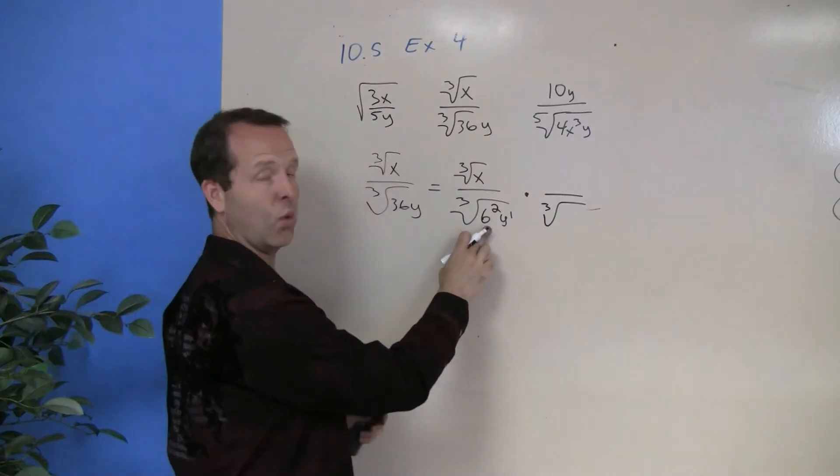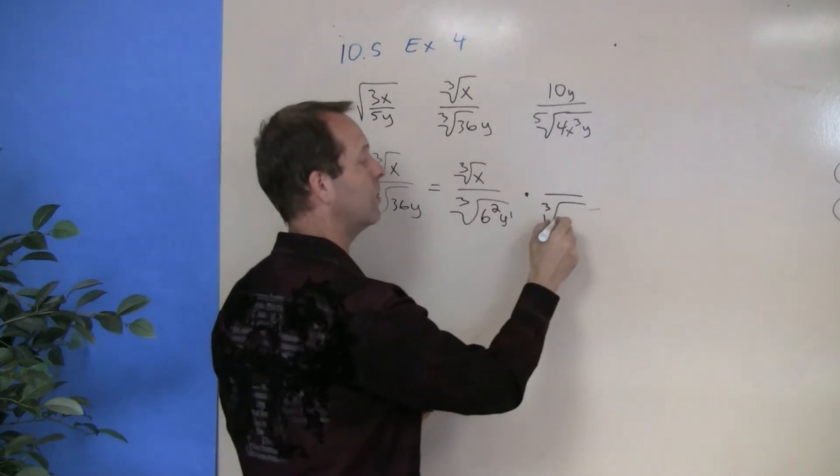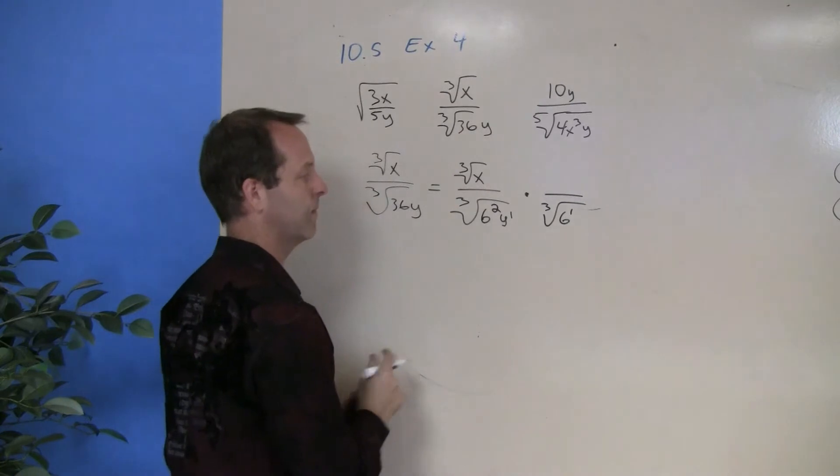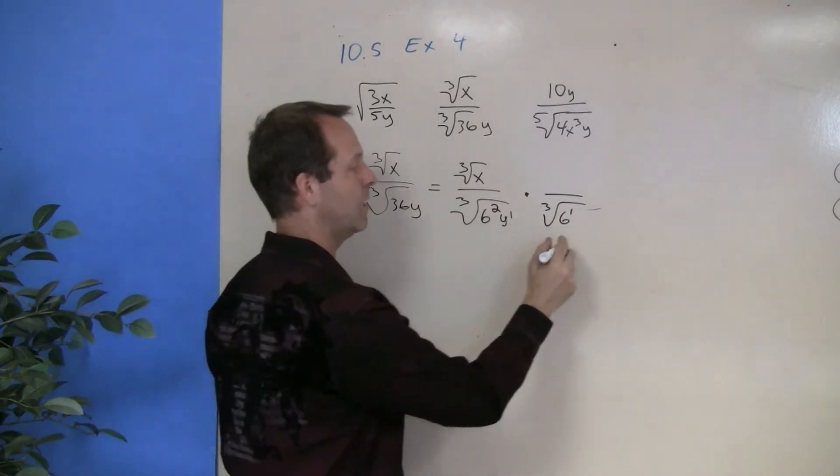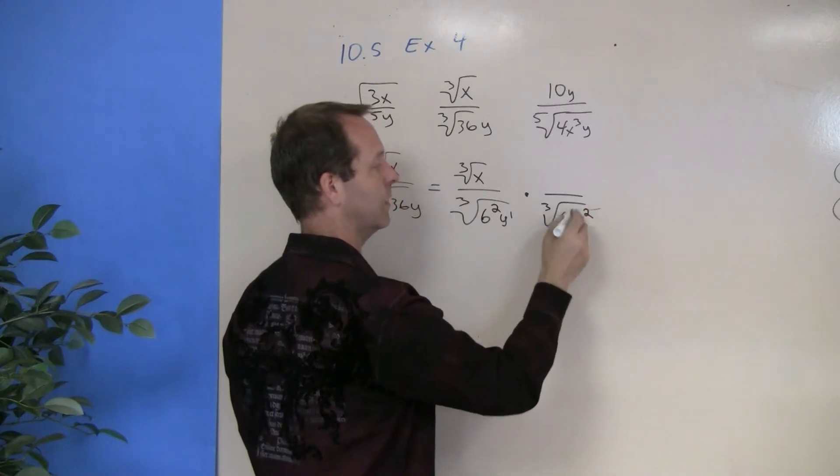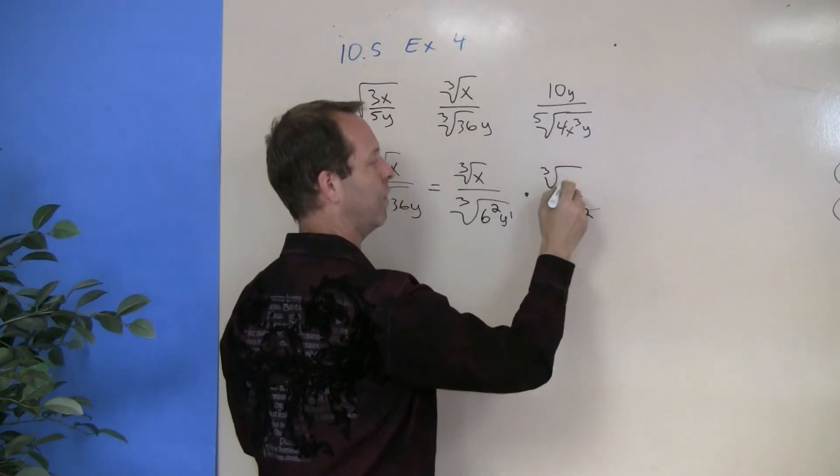I have a 6 squared in here, and I need a 6 to the third, so I'm going to multiply it by 6 to the first. I have a y to the first, and I need three of them, so I'm going to make it y squared. And that's going to be my clever version of 1.